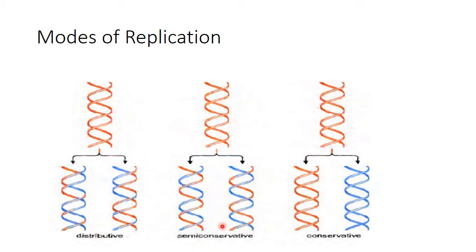The second method is called the semi-conservative method. It proposes that the parental DNA shares one strand each with the two daughter DNAs, and the second strand is newly synthesized. In the figure, you can see that the red colored strand is given by the parental DNA to each of the daughter DNAs, and the blue colored strand is newly synthesized. In this process, half of the parental DNA is conserved — meaning protected or kept as it is — so this method is called the semi-conservative method of replication.